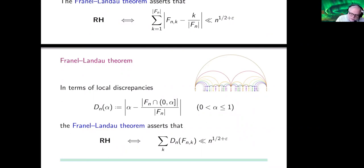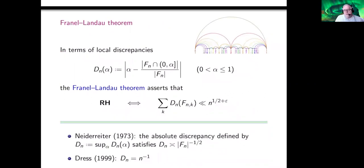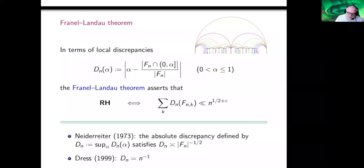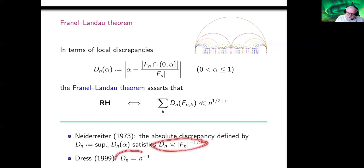The Franel-Landau theorem translates into a statement about local discrepancies. Niederreiter in 1973 studied the absolute discrepancy — the maximum of these local discrepancies — and showed that D_n as a function of n has order of growth equal to the cardinality of F(n) to the minus one half. Later, Dress proved the surprising result that this absolute discrepancy for given n is exactly one over n. The cardinality of the Farey series asymptotically approaches 3 over pi squared times n squared, so Niederreiter's result is consistent with this but Dress's is more precise.